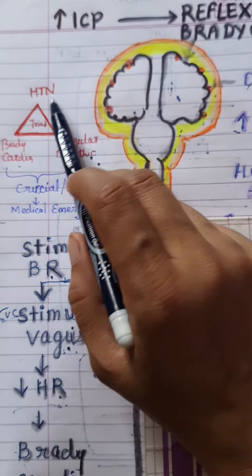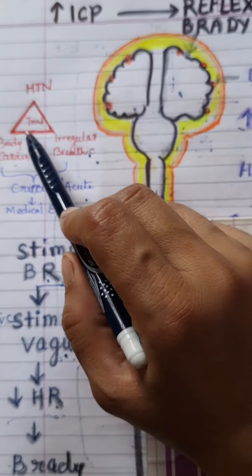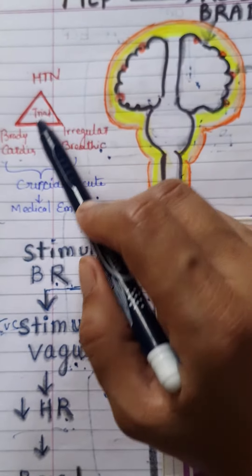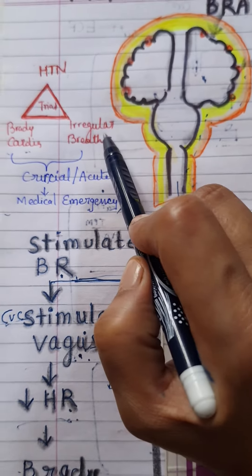So, Cushing reflex is a triad, has a triad: triad of hypertension, bradycardia, and irregular breathing.